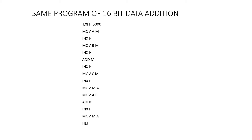Why are we putting this data in B register? Because we want to add 5000 and 5002 first, and later add 5001 and 5003. So we are shifting that 5001 data to B register. Then we increment the HL pair and execute ADD M — what is added is the contents of 5000 and 5002. We also shift the memory content to C register; at this point the memory content is 5003. So 5001 is in B register, 5003 is in C register, and in the accumulator is the result of 5000 and 5002.